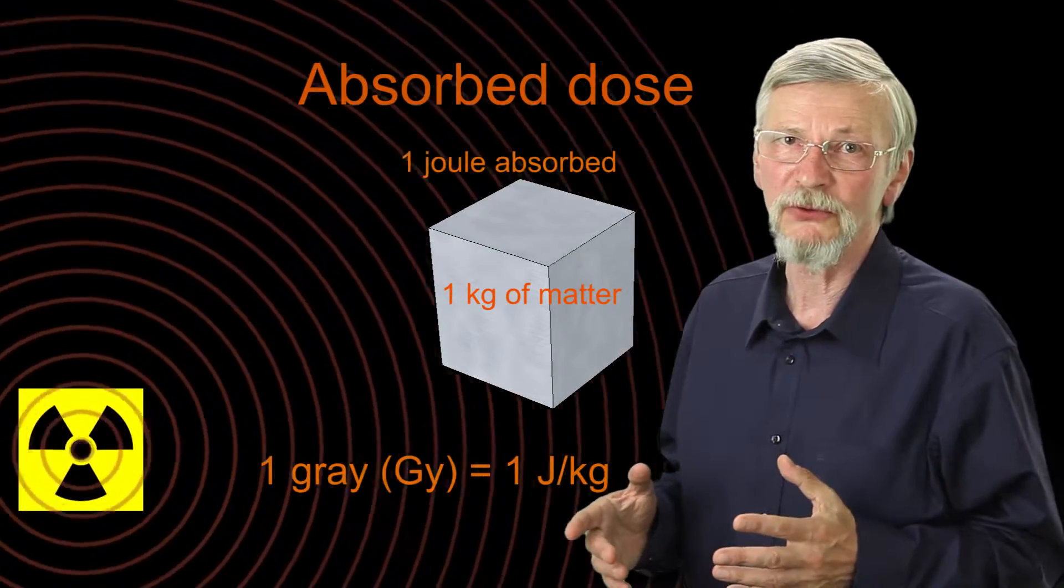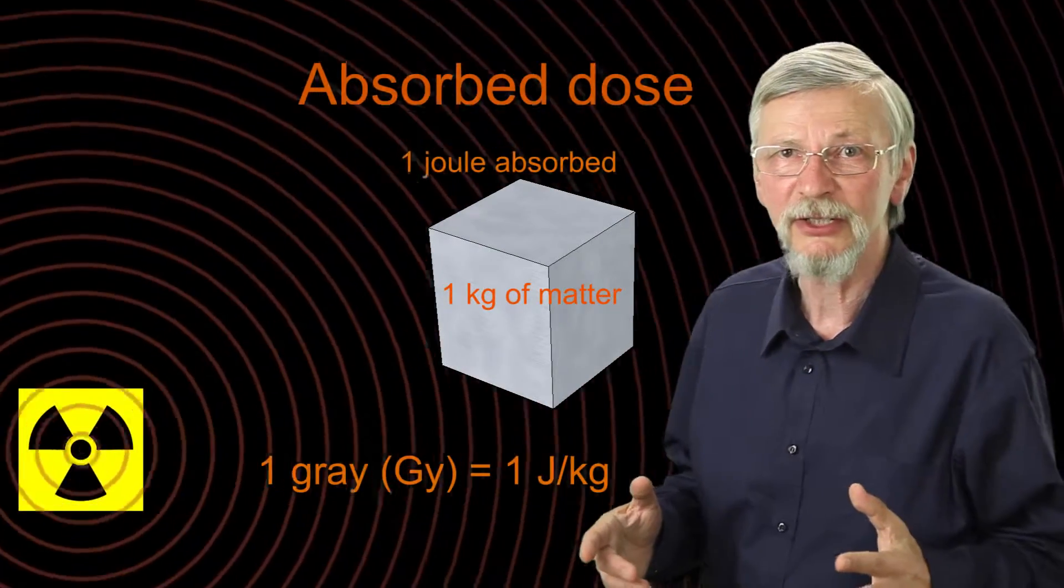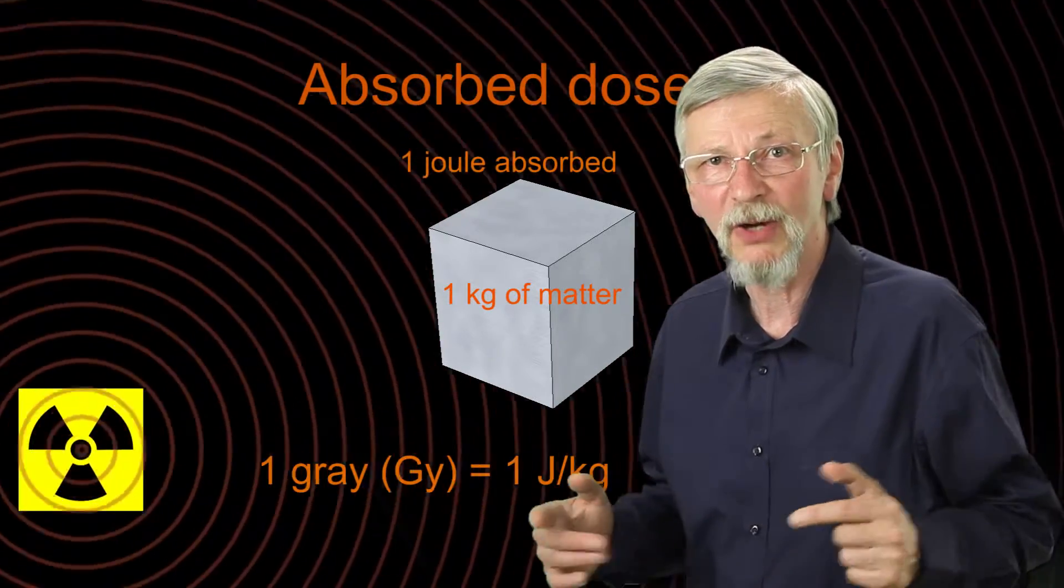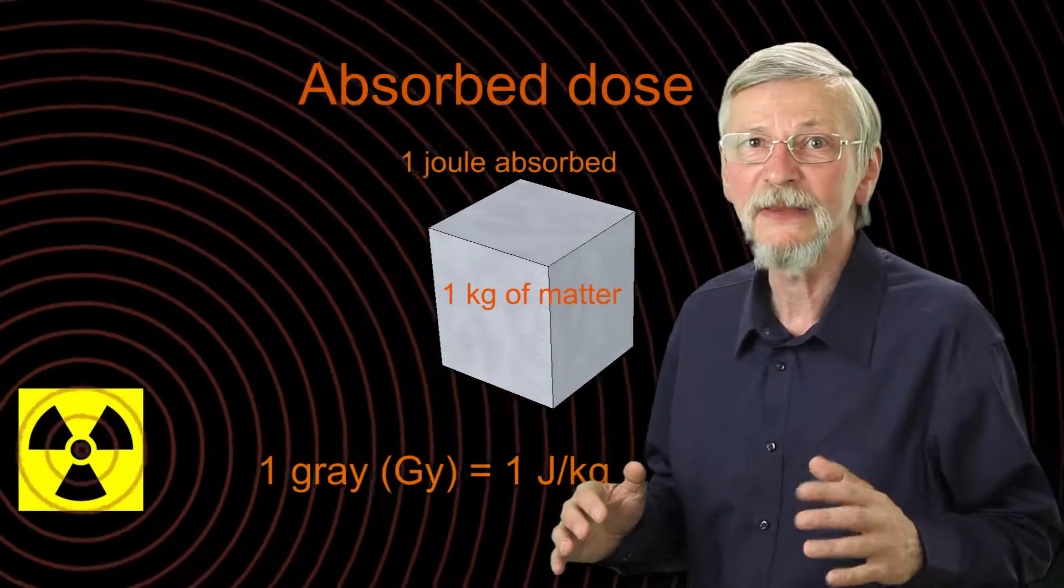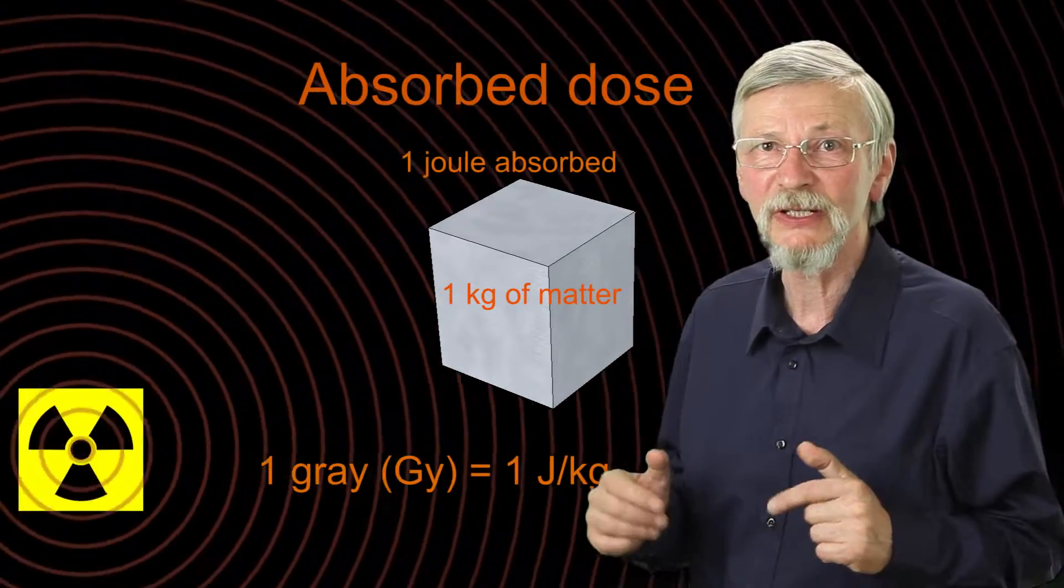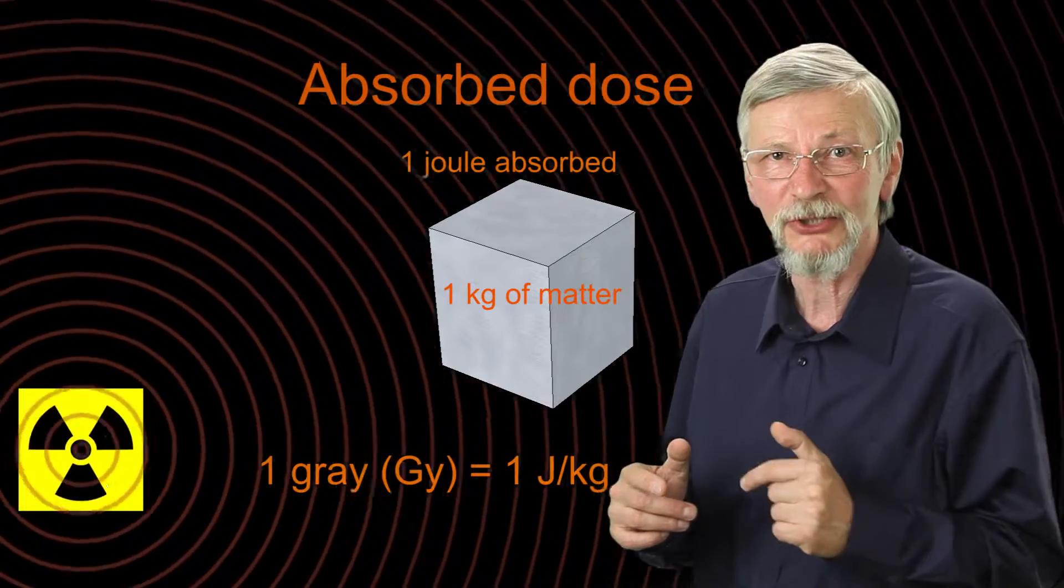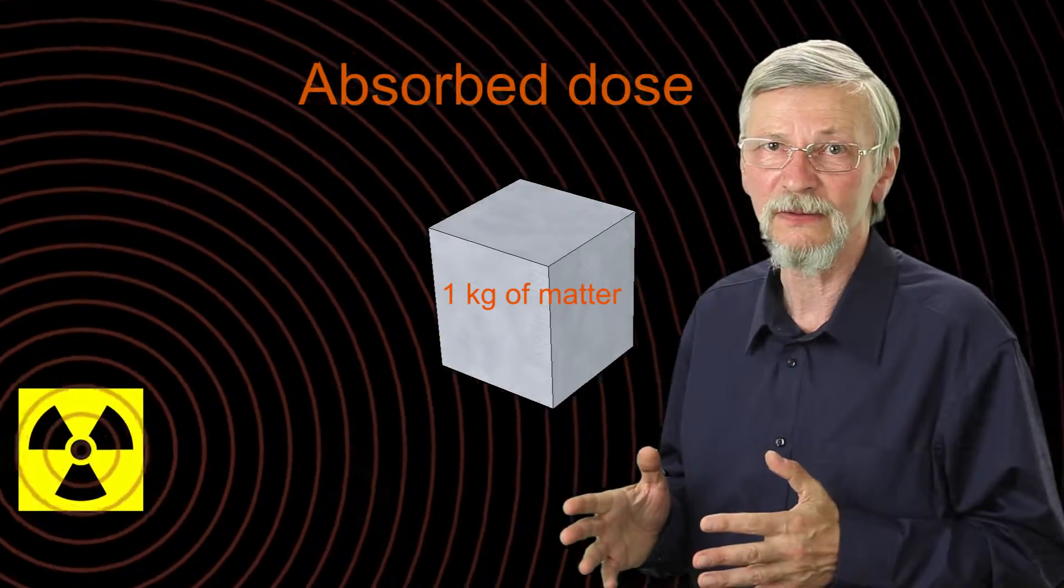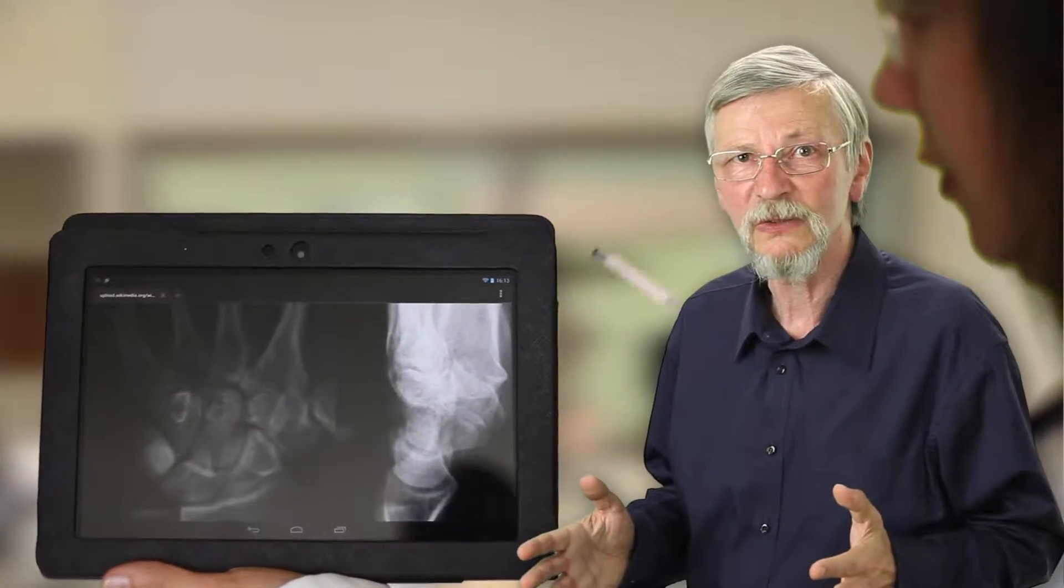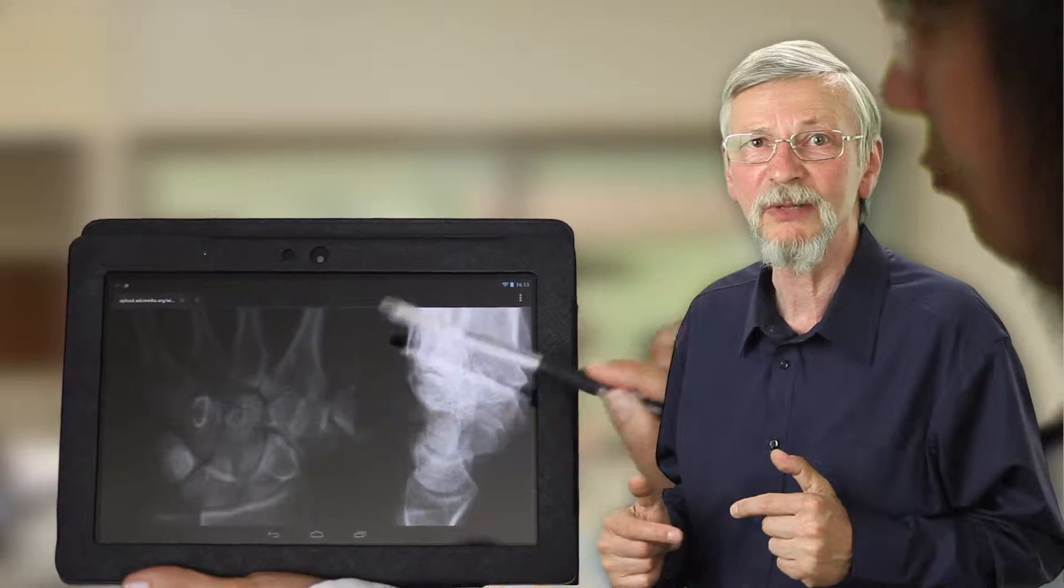Absorbed dose, also known as total ionizing dose or TID, is a measure of the energy deposited in a medium by ionizing radiation per unit mass. The SI unit of measure is joules per kilogram, which has a special name gray. The non-SI unit rad is also used. The absorbed dose depends not only on the incident radiation but also on the absorbing material. A soft X-ray beam may deposit four times more dose in bone than in air, or none at all in a vacuum.